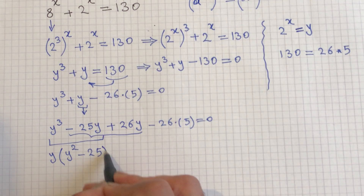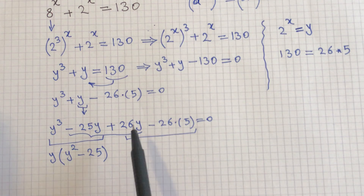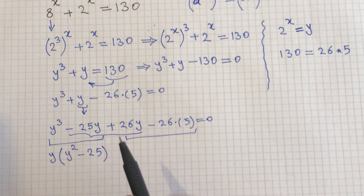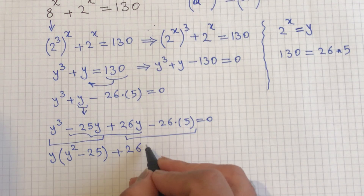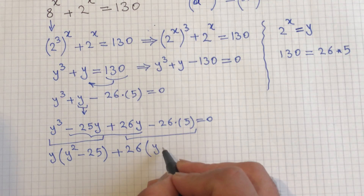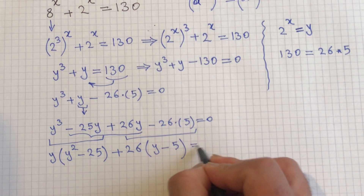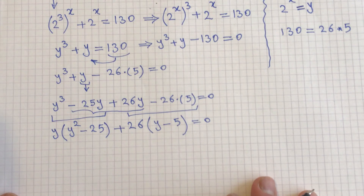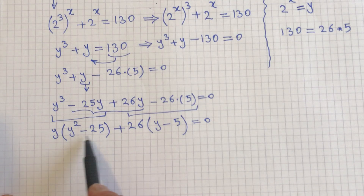For the last two terms, the common factor is 26, so I factor out 26: the first term gives y, and the second gives minus 5, so the factored form contributes 26 times (y minus 5) equals 0.